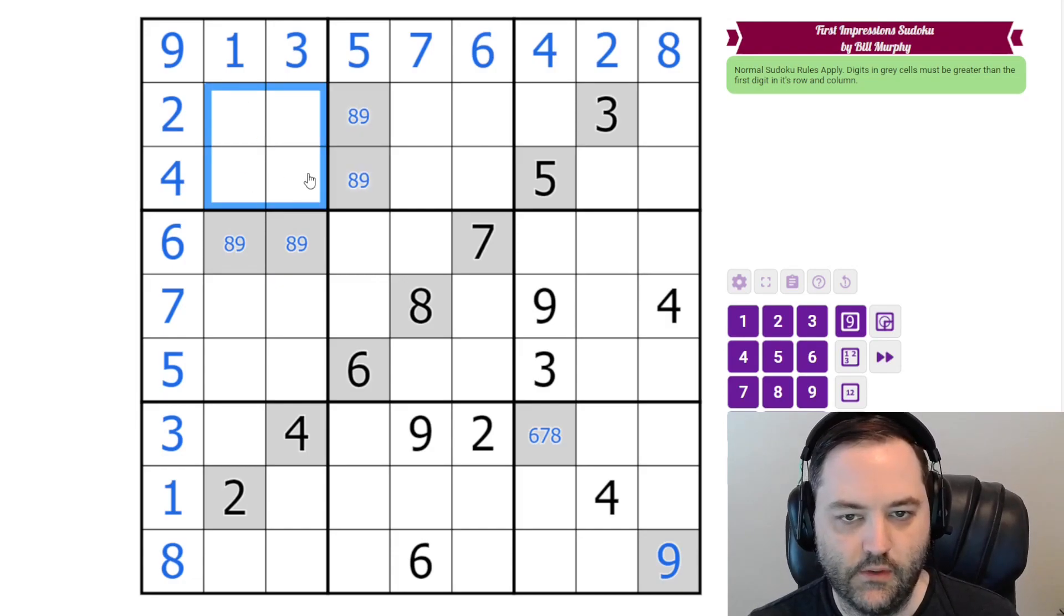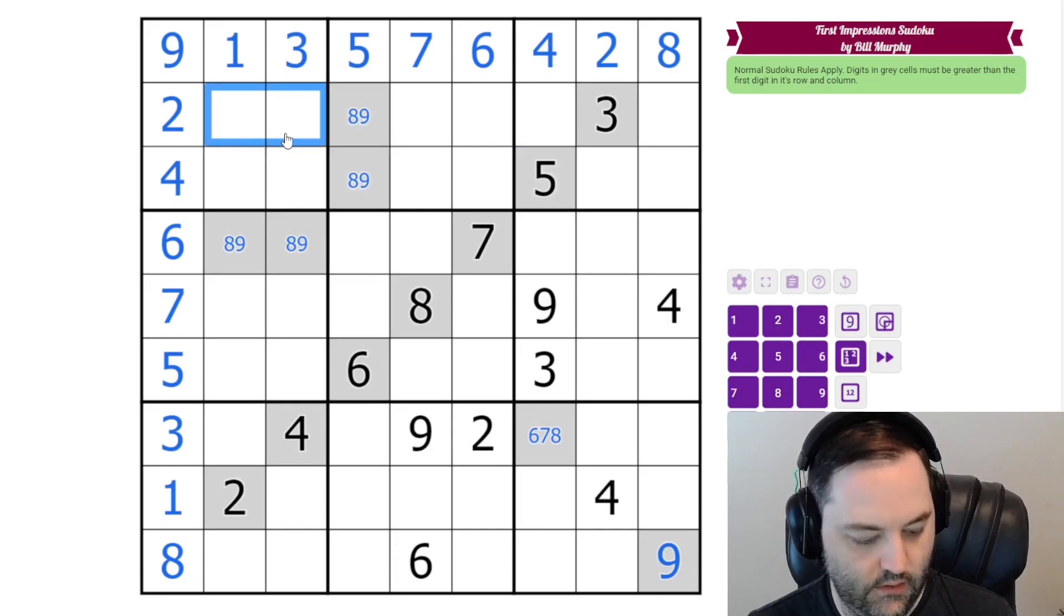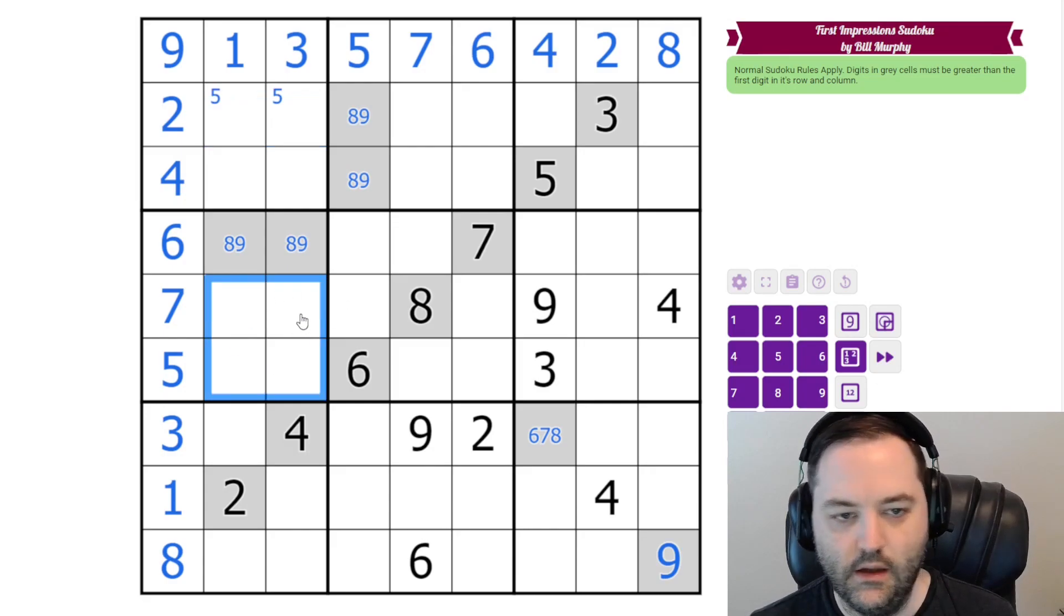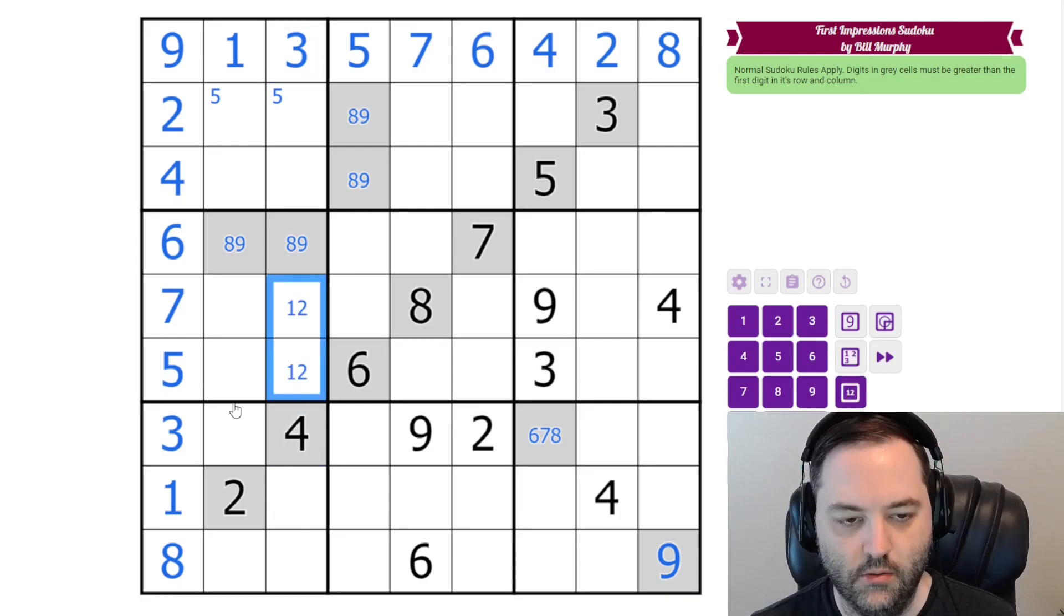And in this box, we need 5, 6, 7, and 8. There's a 5 here, so this is going to have to be where 5 goes. Here we need 1, 2, 3, and 4. We have 3 and 4 in this column, and then 3, 4 in the box are resolved by these givens.